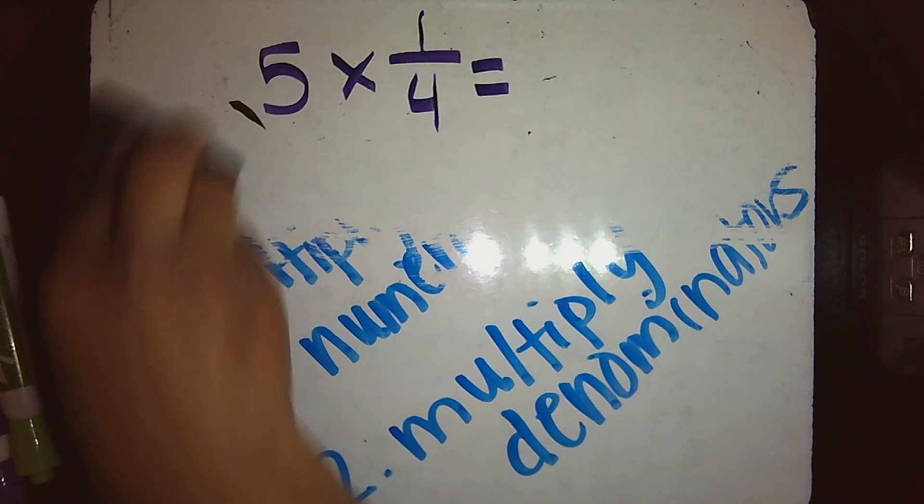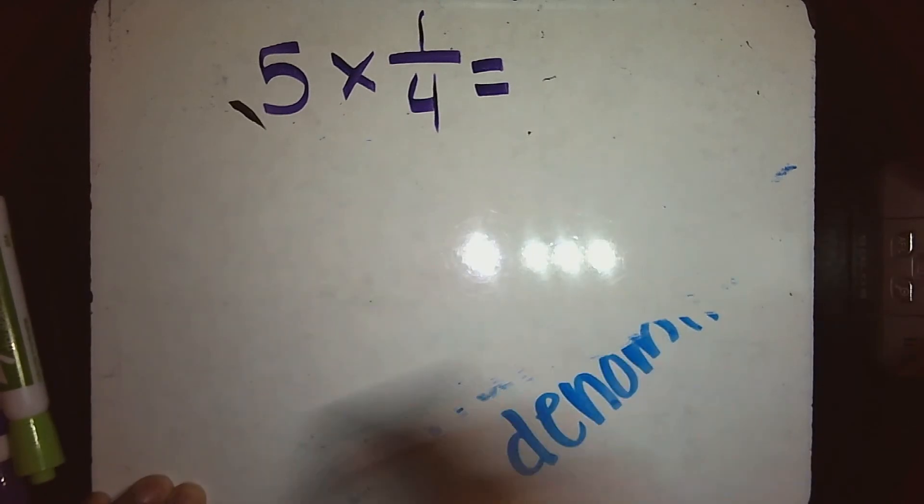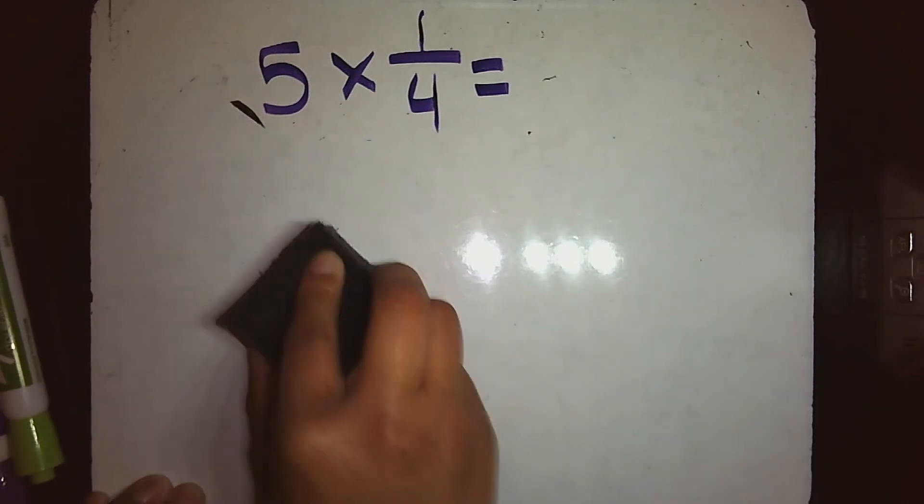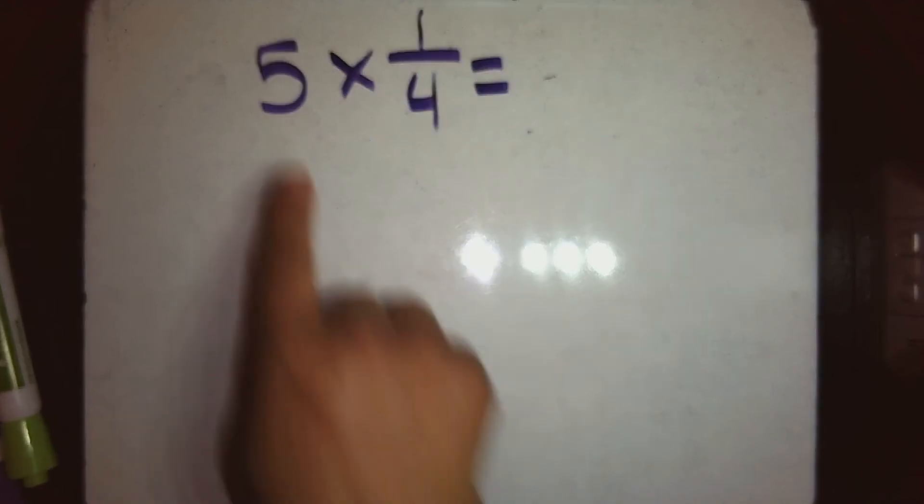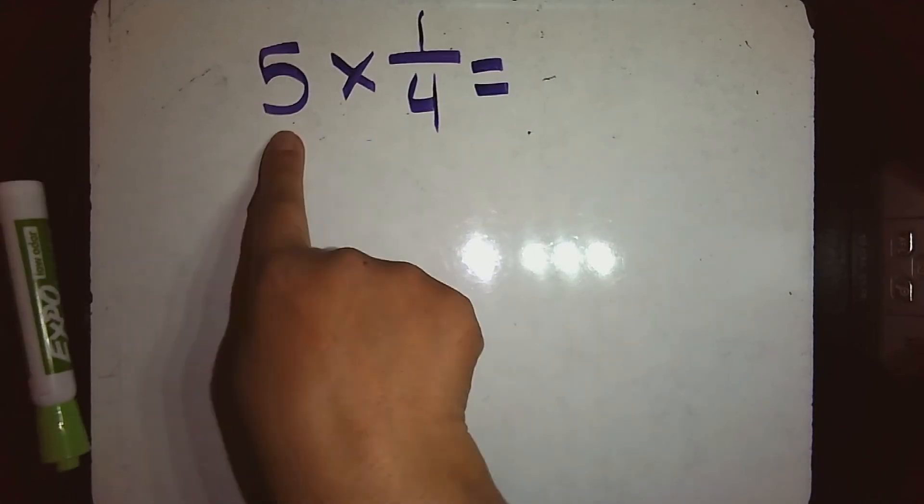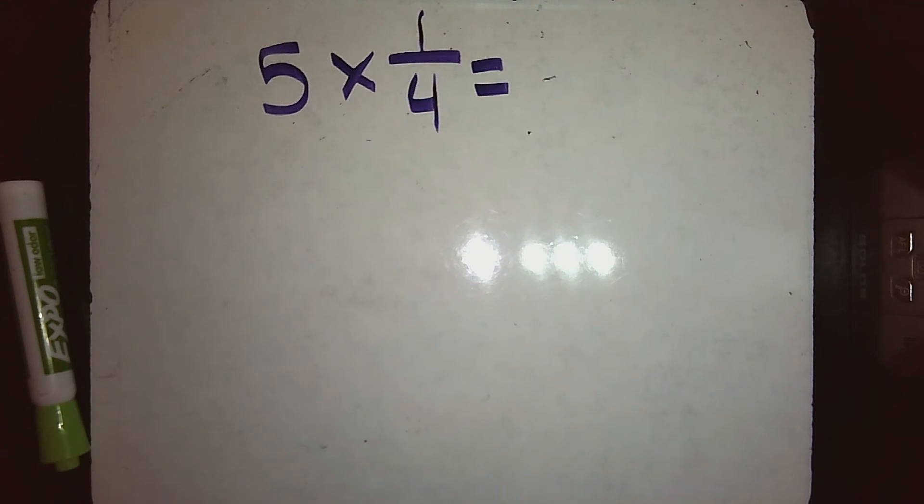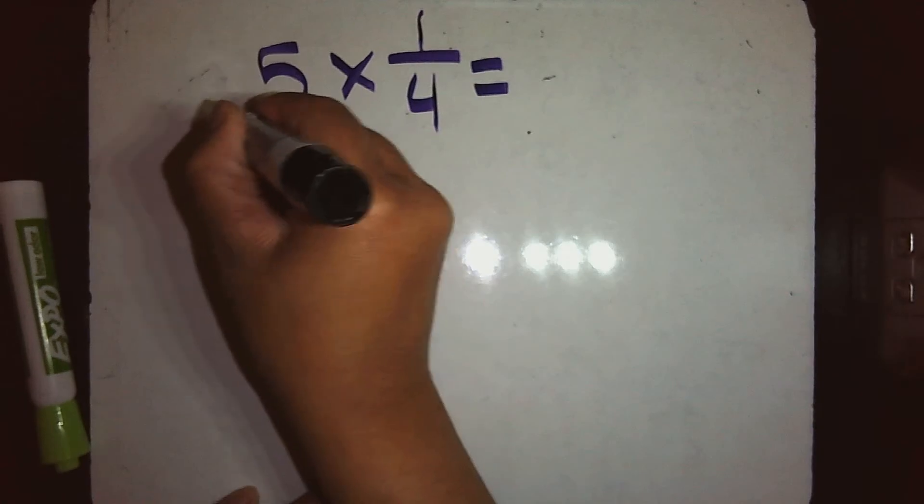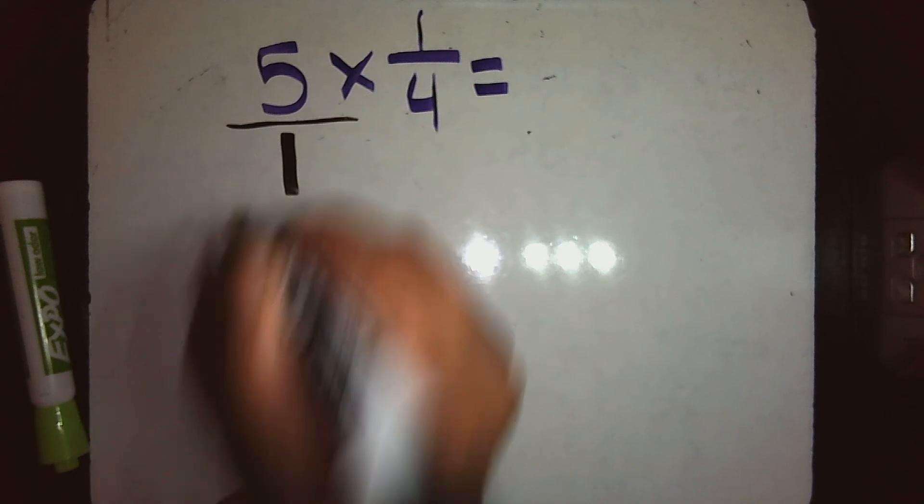I have my problem up here, and it is 5 times 1/4. My 5 is a whole number, so what I have to do is make that into a fraction. I will put that over 1.